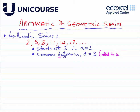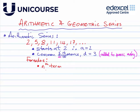The common difference d is added to the previous entry to get the next entry. Now let's look at some formulae involved in arithmetic series. The first one is a formula to find the nth term — so if you're thinking of the third term, n would be 3; for the sixth term, n would be 6. In general, the nth term equals a plus (n minus 1) lots of d.